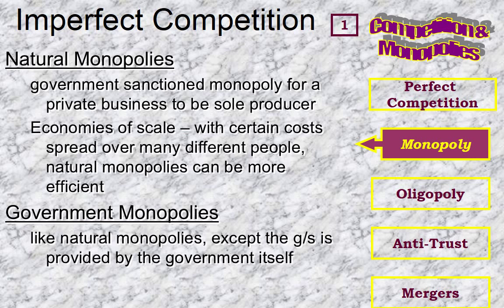This is Chapter 9, Competition and Monopolies, Discussion Number 2: Imperfect Competition. So what about industries that don't have a lot of producers? We consider them to be imperfect competition because there's going to be some control over how the industry interacts with each other.